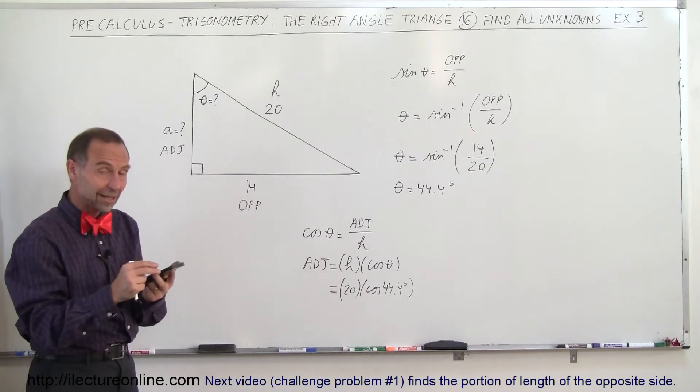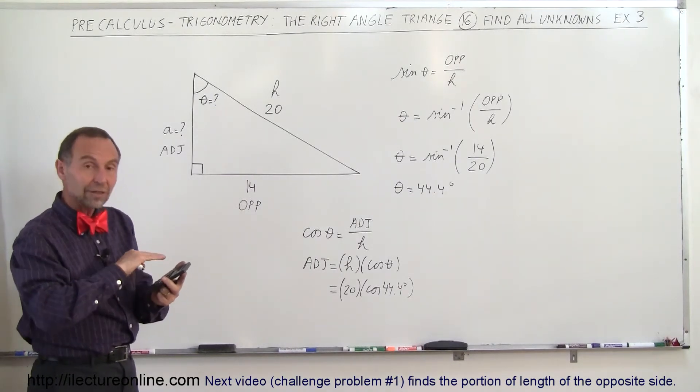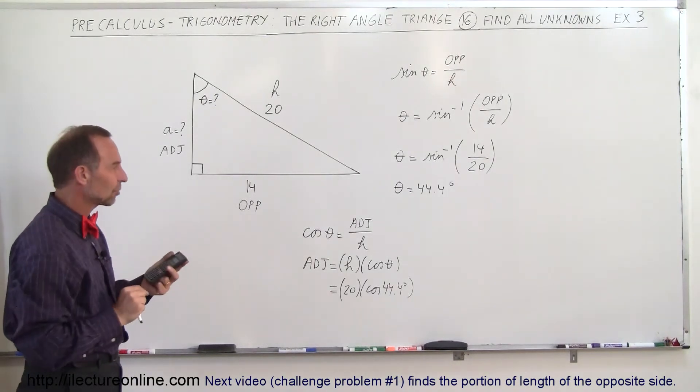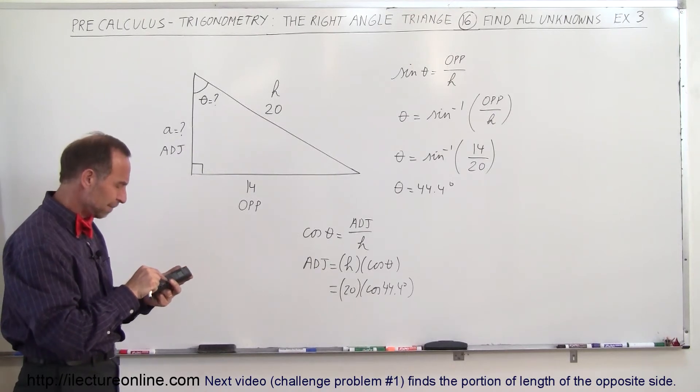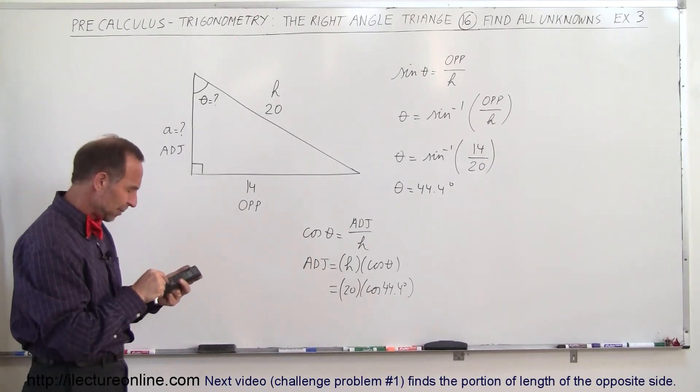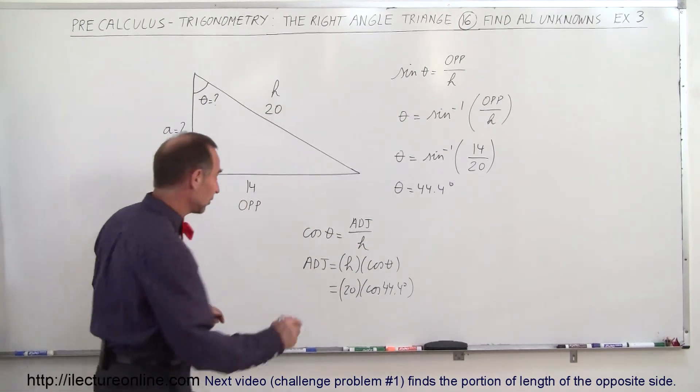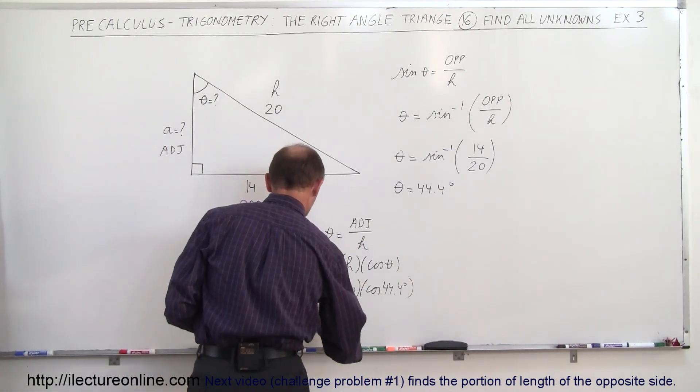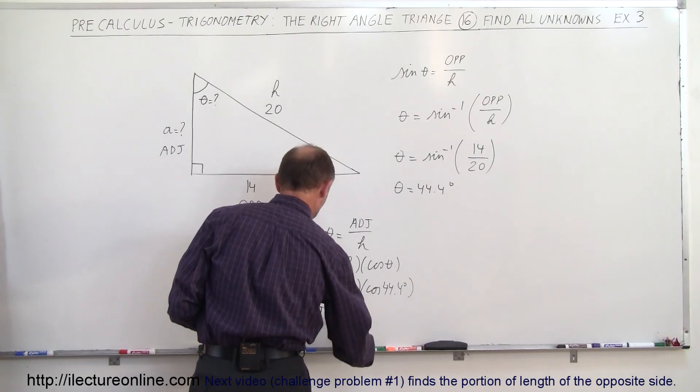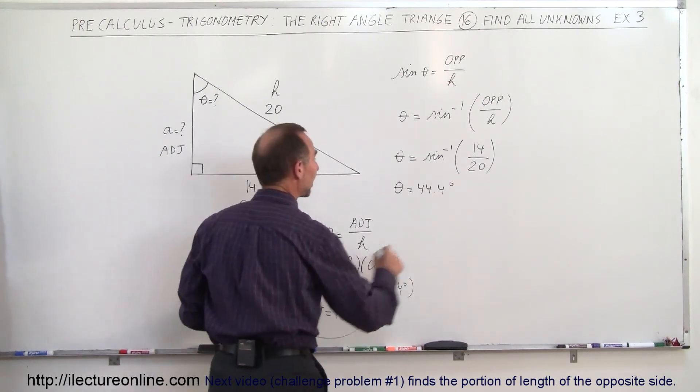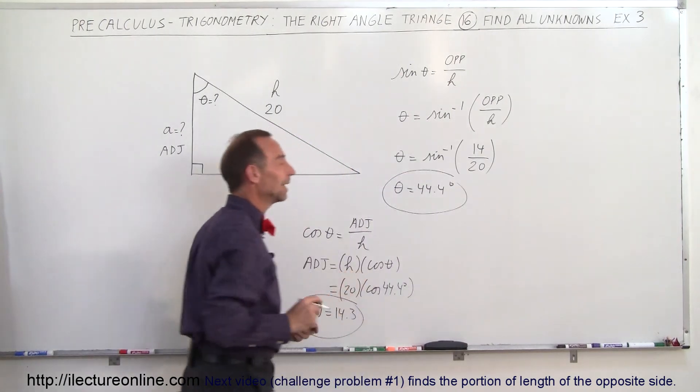It's not a bad idea to leave the answer from the previous part in your calculator with all the decimal places so you get an exact answer. Let's take the cosine of that and multiply by 20, and we get 14.3. So the adjacent side equals 14.3. We found the adjacent side and the angle, and that's how we do that.